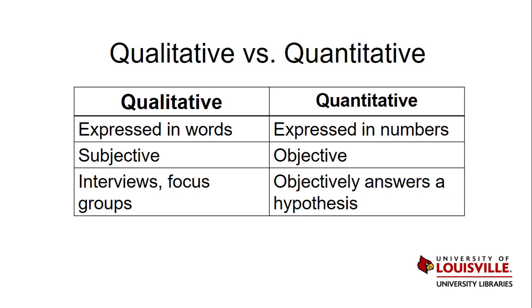Quantitative research consists of information expressed in numerical data, statistics, or percentages. It is purely objective. Quantitative research seeks a concrete, objective answer to a set hypothesis, using statistical analysis of collected data.